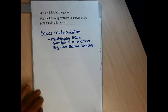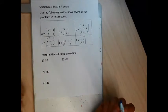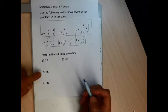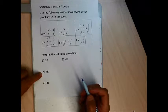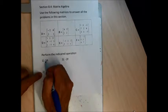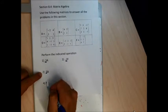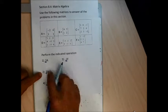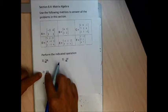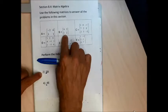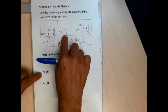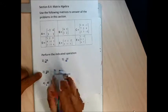So the first four problems are written with symbols and numbers, and the number is the scalar — the number I'm supposed to multiply each number in the matrix by. Problem 2 says 5B, and up top it says matrix B is the matrix 4, 5, 1, 2.